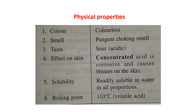Physical properties of HCl: Color — colorless. Smell — pungent, choking smell. Taste — sour; it is acidic. Effect on skin — concentrated acid is corrosive and causes blisters on skin. Solubility — readily soluble in water in all proportions. Boiling point — 110°C. It is a volatile acid.